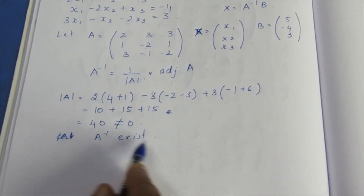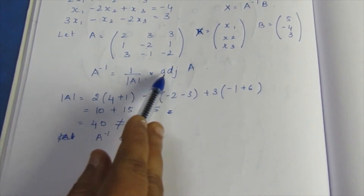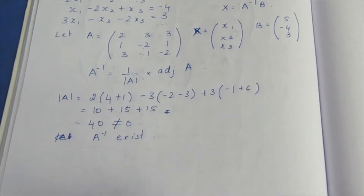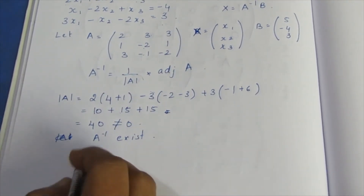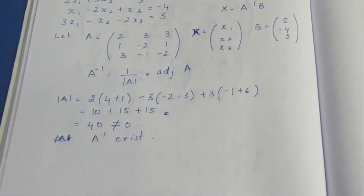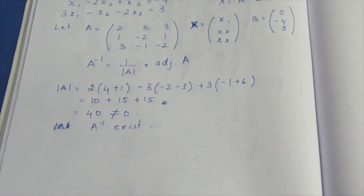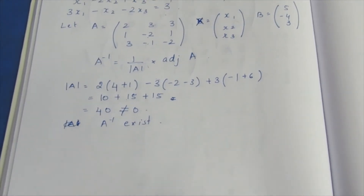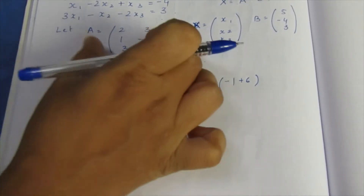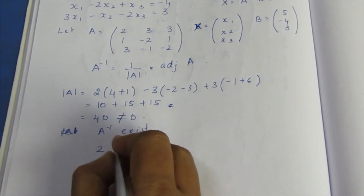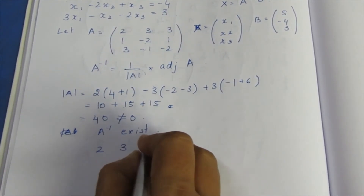Since A inverse exists, we proceed to find the adjoint of A. For a 3×3 matrix, the adjoint is computed using the cofactor method.